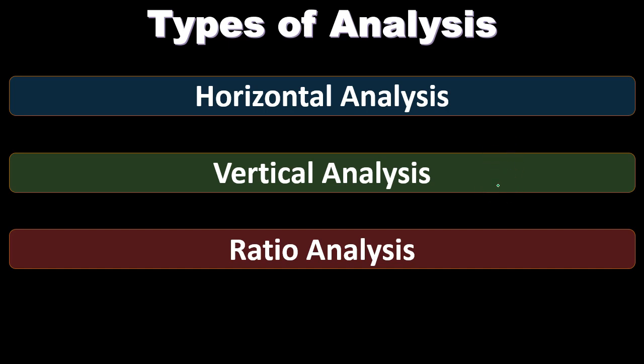A vertical analysis is a comparison within the same period, so we're comparing to a key component. On the income statement, for example, we'll compare everything to the goal of the income statement — revenue generation — and create a vertical analysis. The ratio analysis involves picking up key components within the financial statements to help us get insight into the performance of the company.